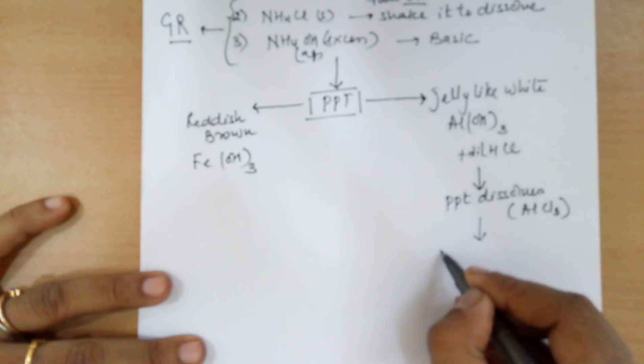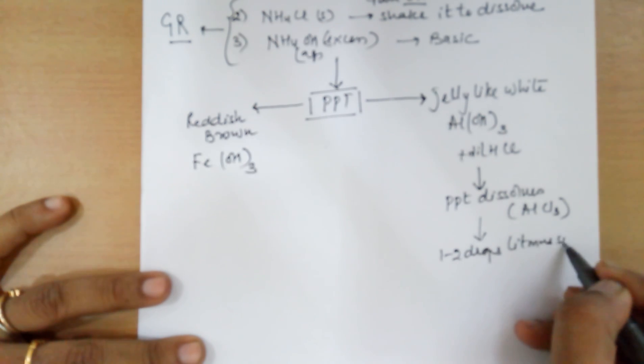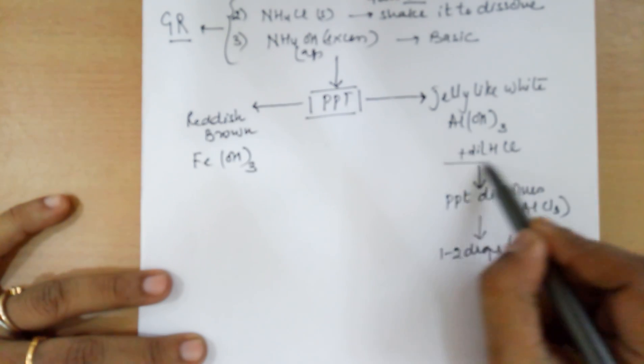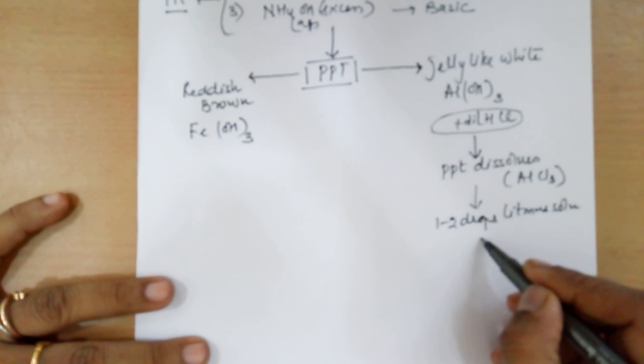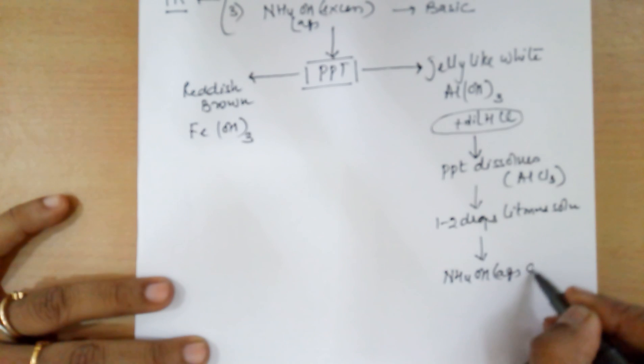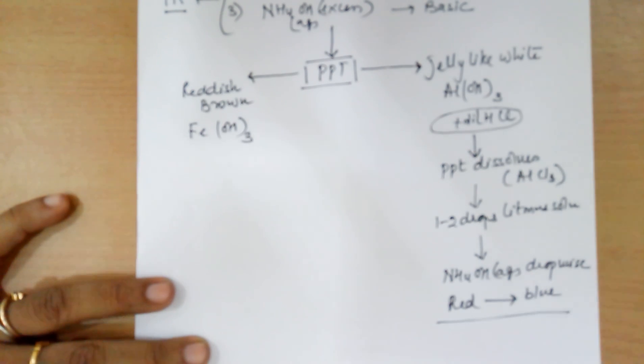After this, you need to add one to two drops litmus solution. It could be red, it could be blue. But whichever you add, the color would change to red. The reason is addition of dilute HCl prior to the addition of the litmus solution. After this, you can start adding ammonium hydroxide aqueous solution dropwise. Slow addition would lead to the red color of the litmus to change to blue. That's not the test. That is merely showing the transformation of the acidic medium to basic medium.